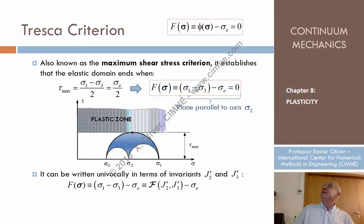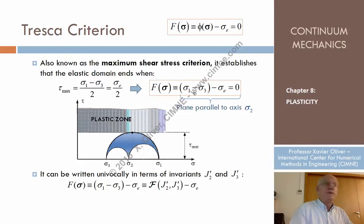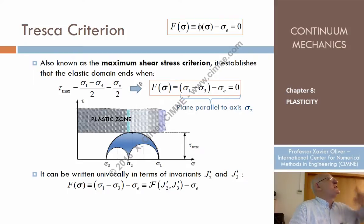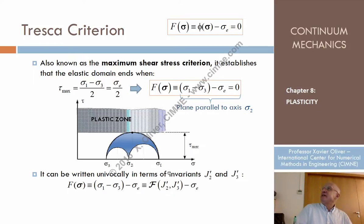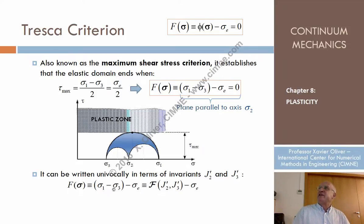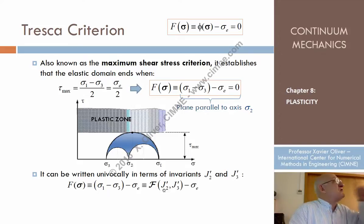So what function is that? It's sigma_1 minus sigma_3 — a measure of the maximum shear stress at the point. It can be proven that this can be rewritten in terms of the invariants. If I write this difference in terms of the invariants, I arrive at an expression that doesn't depend on the first invariant.